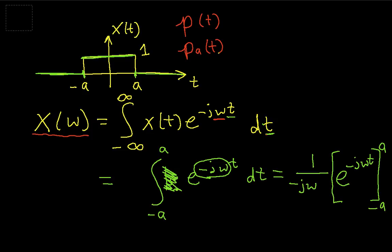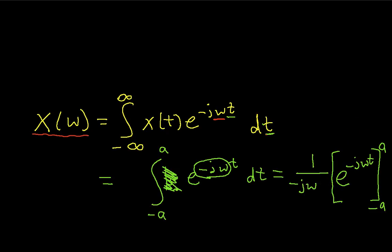And before I actually evaluate that, let me get rid of at least a little bit of this stuff. Okay, so I evaluate this then, and I get 1 over negative j omega. I replace t by a in the upper limit. I get e to the minus j omega a. Then I subtract e to the minus j omega negative a.